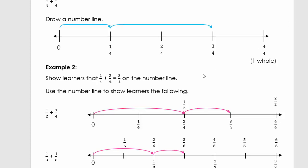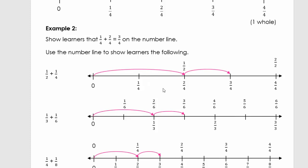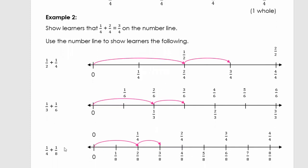The next example uses quarters and eighths. Four and eight are multiples of each other, so we divide the number line into eighths and quarters. Using the chocolate example: we ate one quarter of the chocolate and then one eighth. How much did we eat? Three eighths. I want you to pause here and explain these three examples to an adult using a real-life object — you don't only have to use chocolate, you can use pizza.